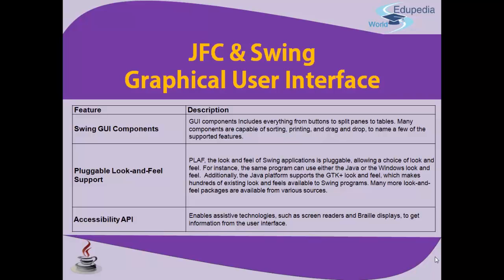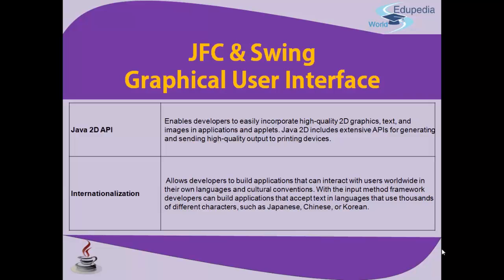The Java libraries are very rich. The Accessibility API enables assistive technologies such as screen readers and braille displays to get information from the user interface. The Java 2D API enables developers to incorporate high-quality 2D graphics, text, and images in applications and applets, and includes extensive APIs for generating and sending high-quality output to printing devices.